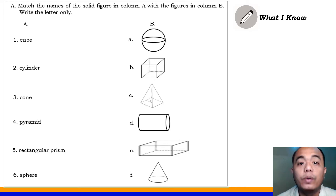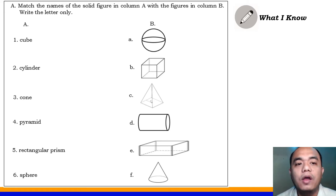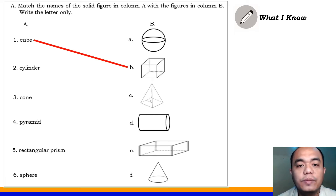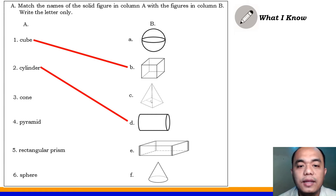We will look for column B, the correct figure described in column A. Number 1 — what do you think is the answer? Cube. Correct! Cube is letter B. Next, cylinder. Cylinder is letter D. Next, number 3, cone. Cone is letter F.